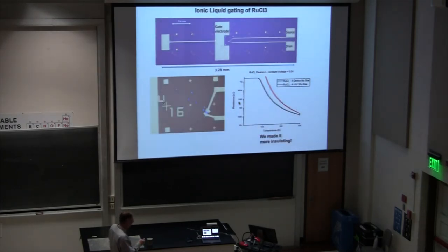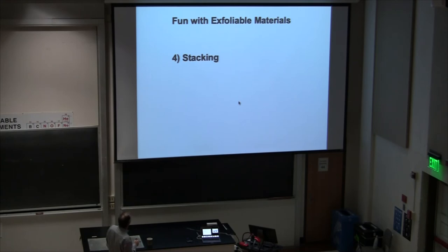We tried some ionic liquid gating on that sample I showed you earlier, ruthenium trichloride, which is close to a Kitaev spin liquid. Our goal was to tune the magnetism with a gate voltage. It didn't work. We tried a lot of different 2D magnetic materials, semiconductors, with ionic liquids. We haven't been able to make any of them work. Later, I'll talk to you about a way around this I think will work.